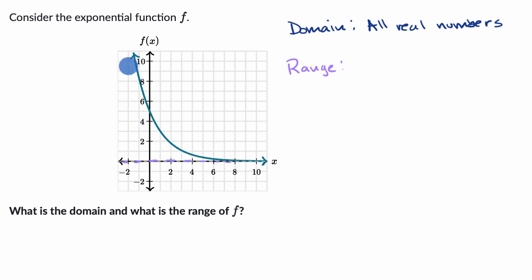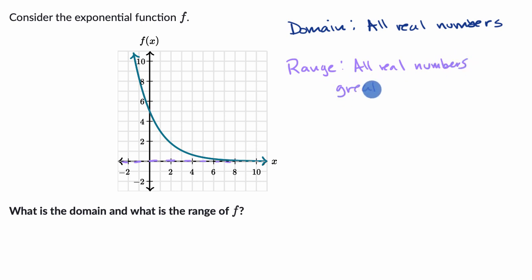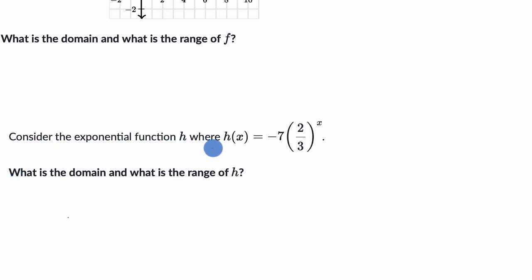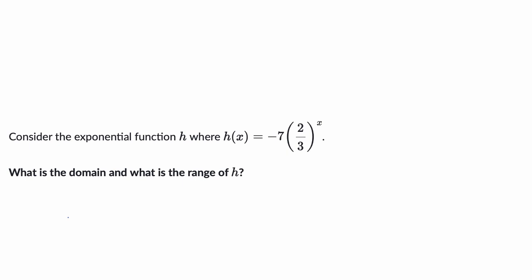So it looks like this function can take on any real value that is greater than zero, but not at zero or below zero. So the range is all real numbers greater than zero. Another way to think about it: f of x is greater than zero, not greater than or equal to — it'll get closer and closer, but not quite equal that. Let's do another example where they haven't drawn the graph for us. Consider the exponential function h — let me get rid of all of this so we can focus on this problem. So consider the exponential function h where h of x is equal to that. What is the domain and what is the range of h?